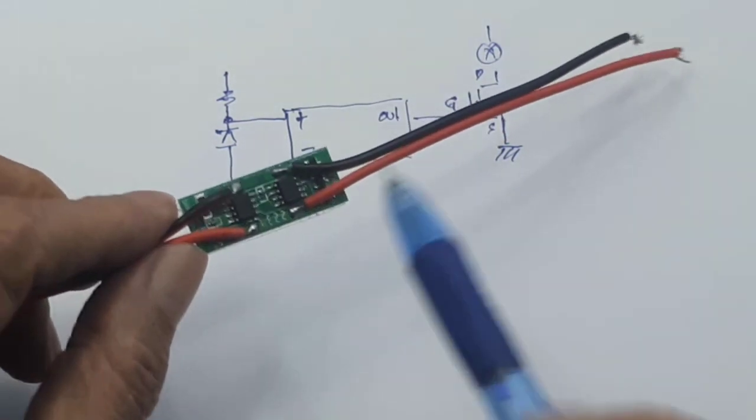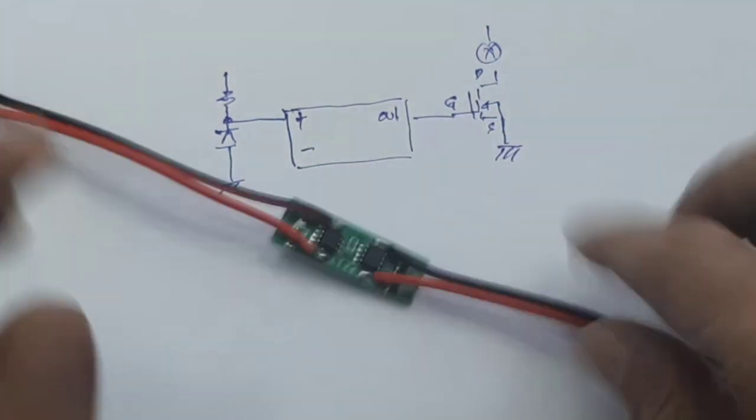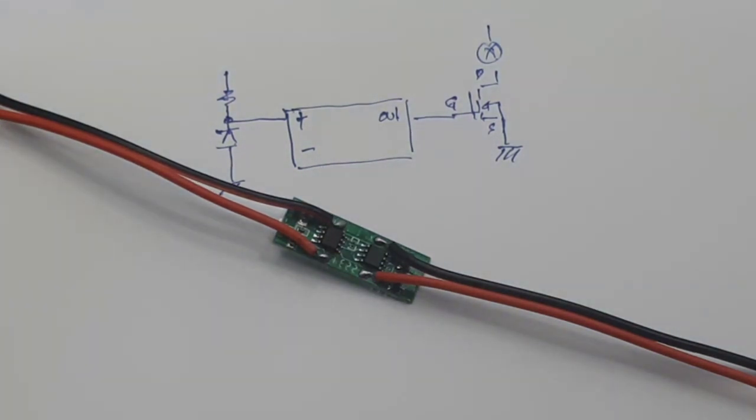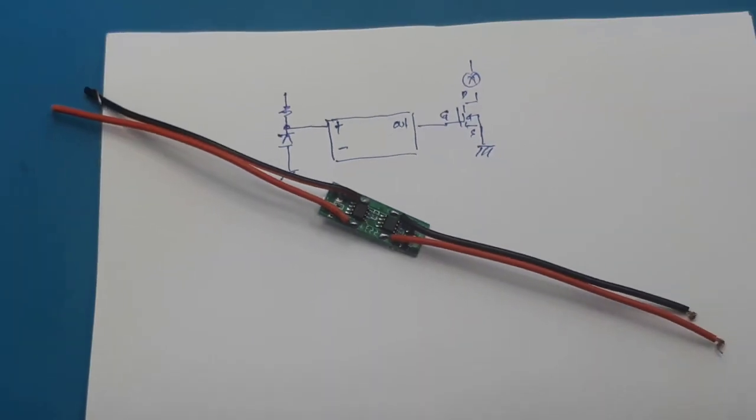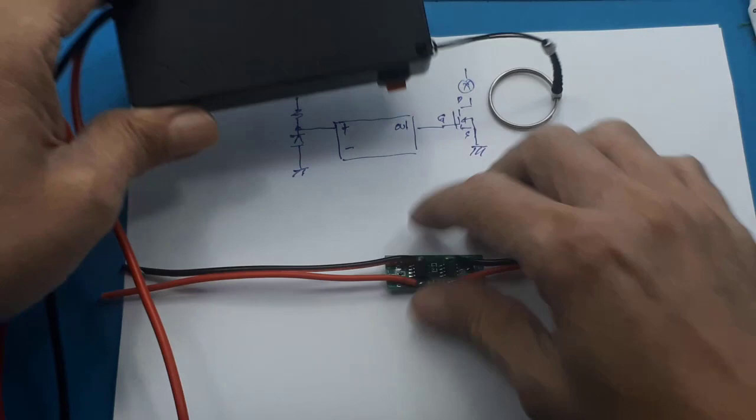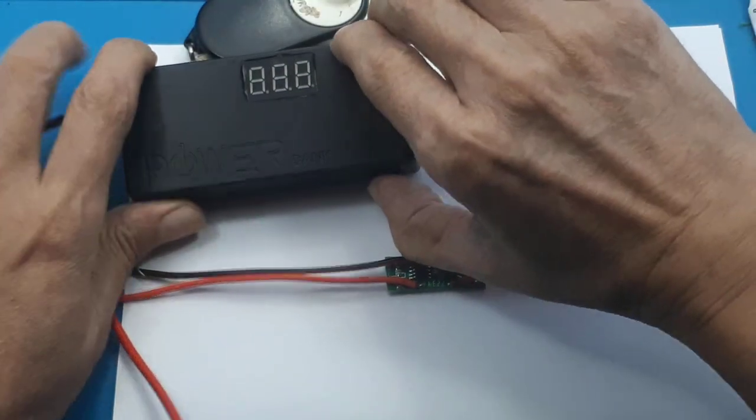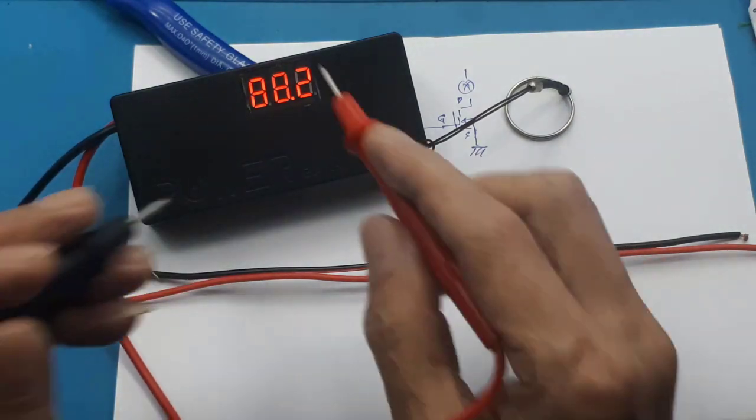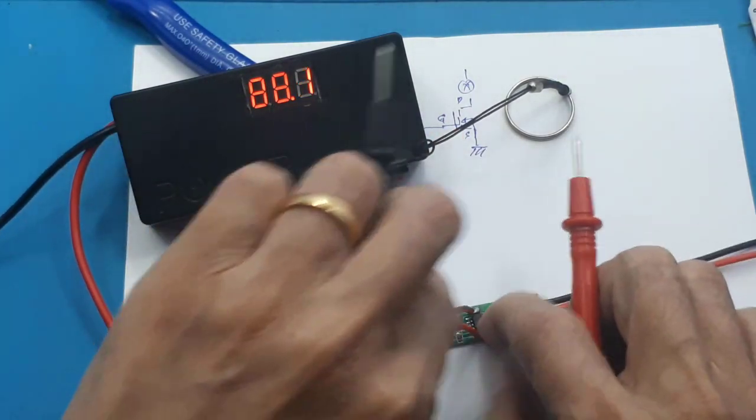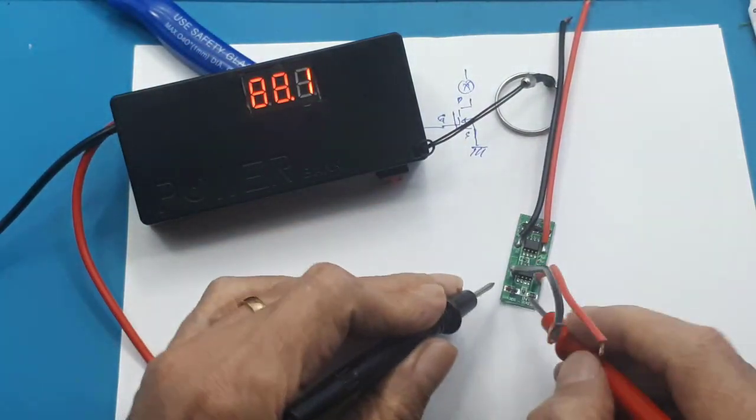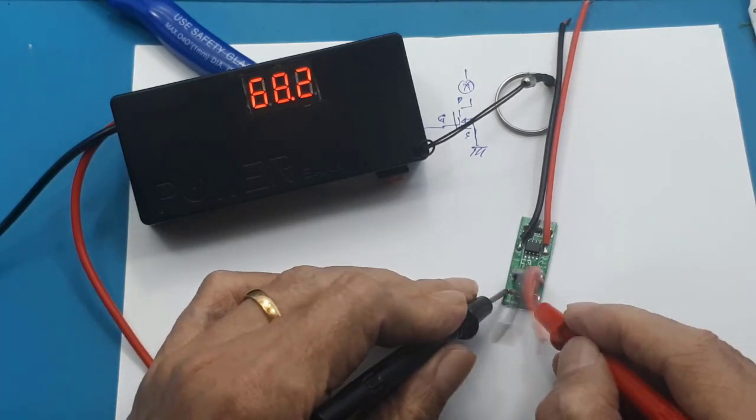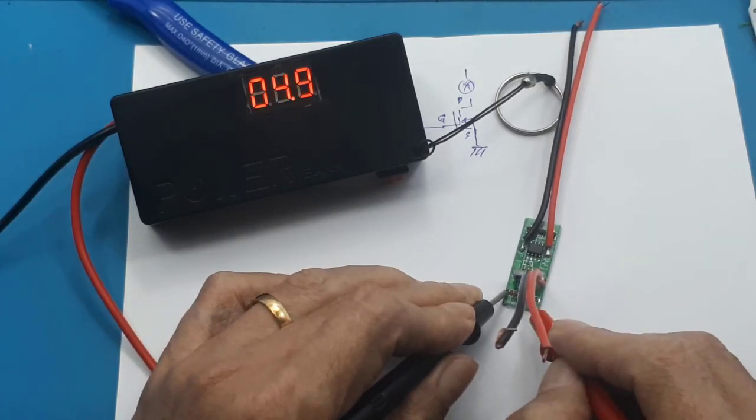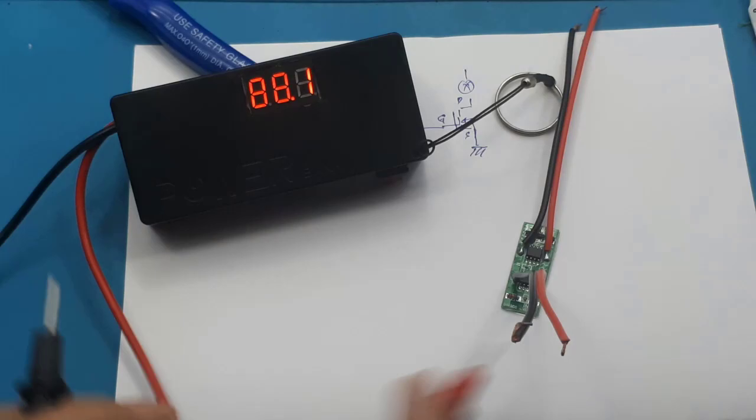Ini zener-nya 5 atau 3.3. Jadi di elektronika tegangannya umumnya kalau IC ini bila tidak 5, ya 3.3. Kita ukur saja zener berapa volt. Terlihat, nyalakan dahulu. Tegangan 8.8, saya ukur zener-nya menggunakan... zener berapa volt? 5 volt. Oke, jadi zener-nya 5 volt.